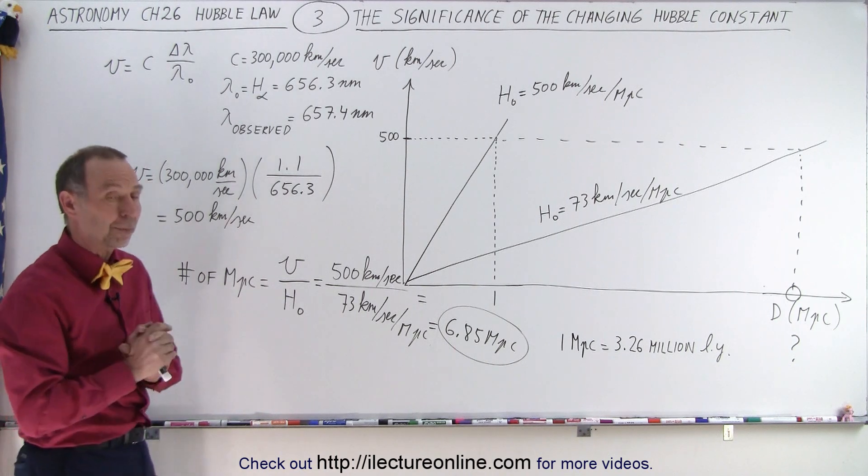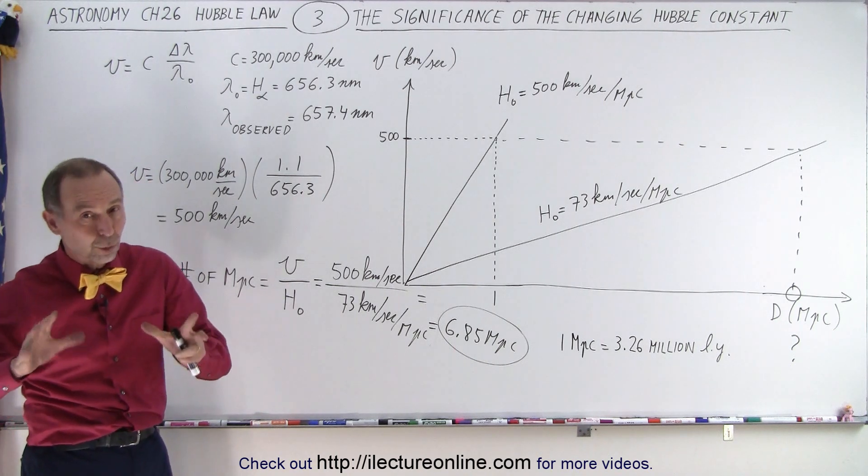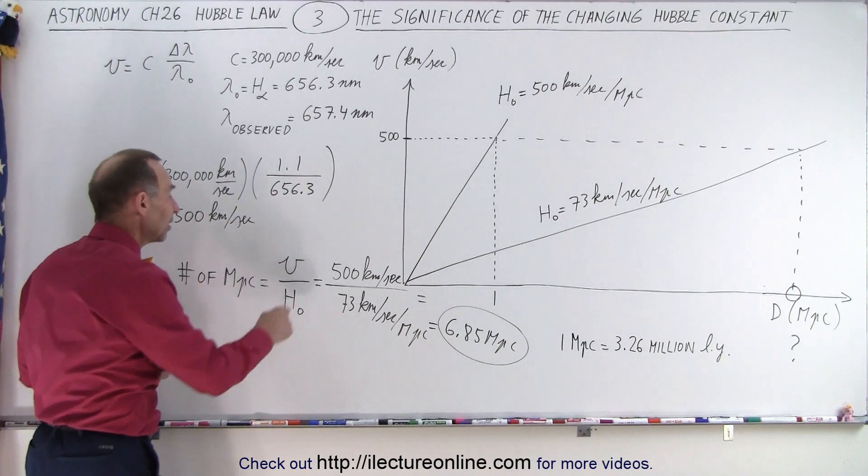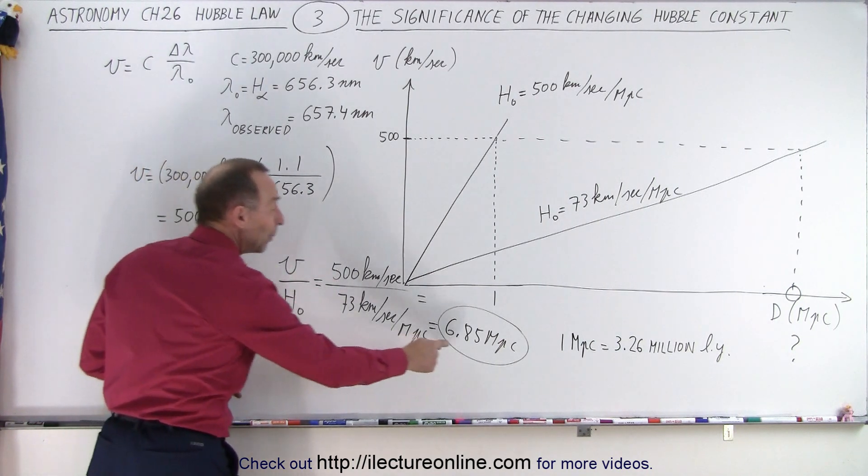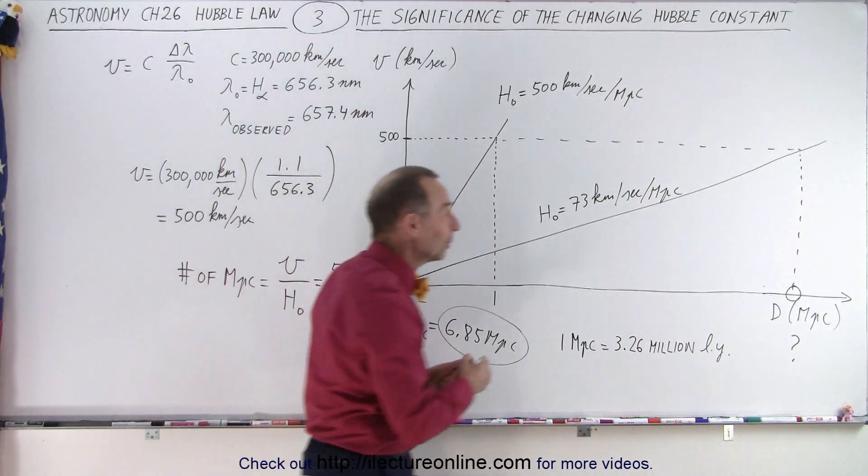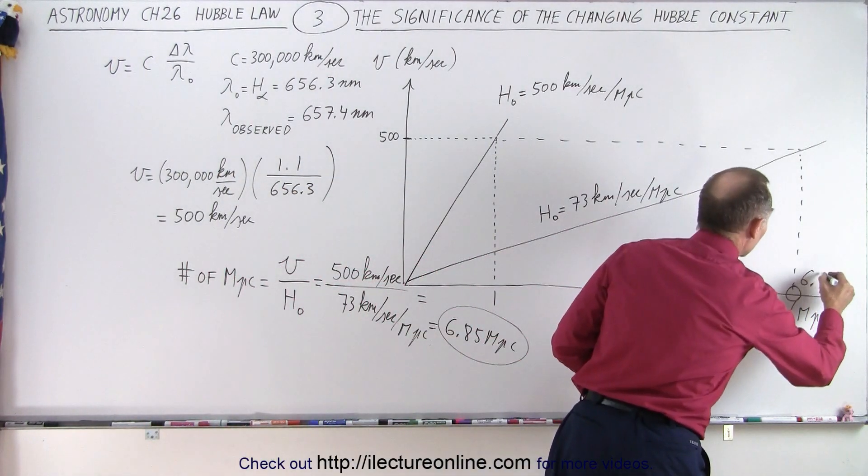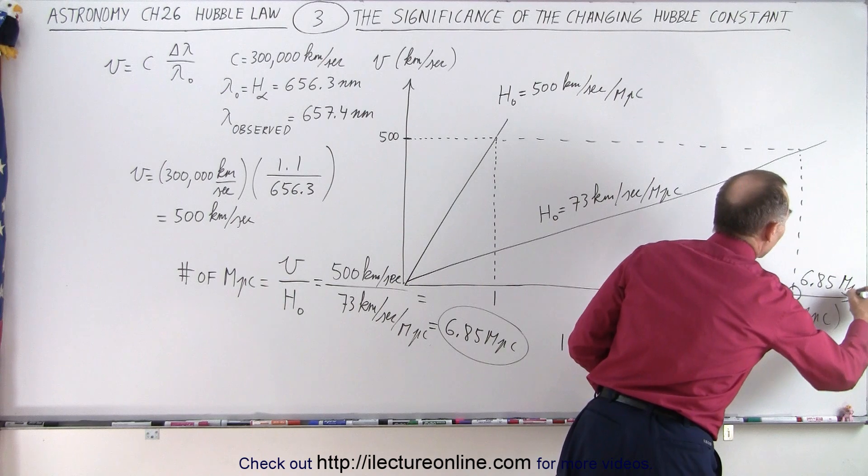But now that we know the value is not at all 500 kilometers per second per megaparsec, but now we know it's more like 73, we take the velocity divided by the new Hubble constant, 500 divided by 73, and we get almost 7 megaparsec away. So this would be 6.85 megaparsec.